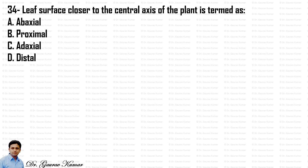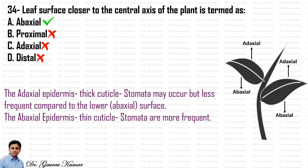The leaf surface closer to the central axis of the plant is termed the adaxial surface. The adaxial epidermis contains a thick cuticle and stomata may occur but are less frequent compared to the lower, abaxial surface. The abaxial epidermis has a thin cuticle and stomata are more frequent.